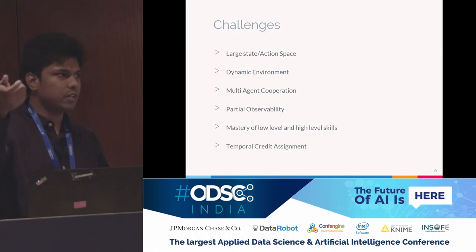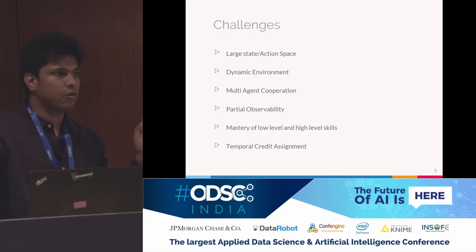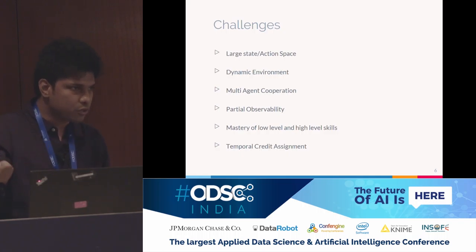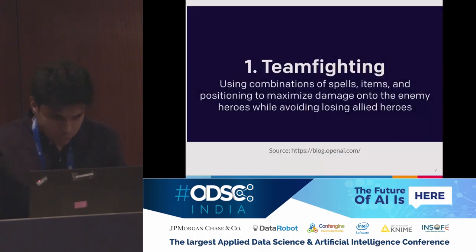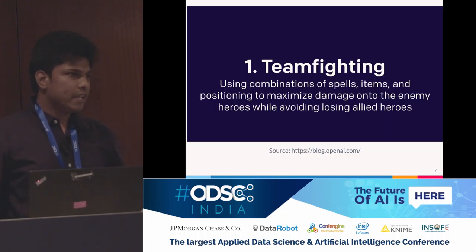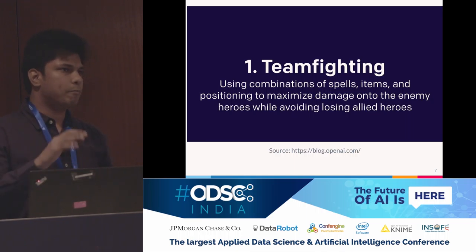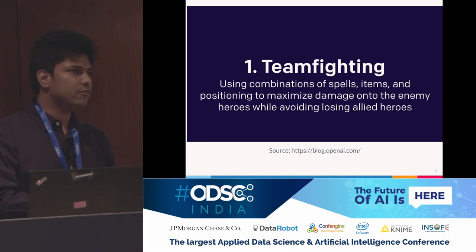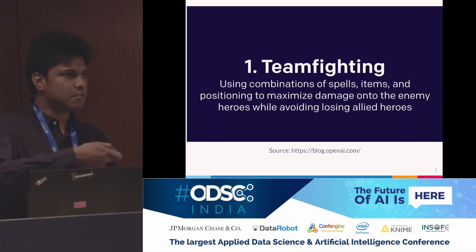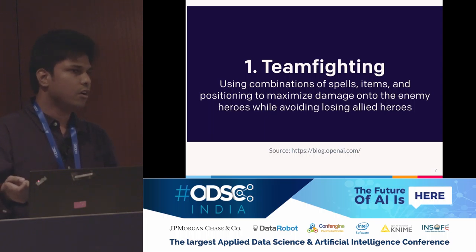For an AI algorithm trying to process that sequence of events, it's very hard to figure out which of those actions actually led to losing the game. So OpenAI, which is a non-profit organization, built a team of five neural networks trained using reinforcement learning to participate against humans.